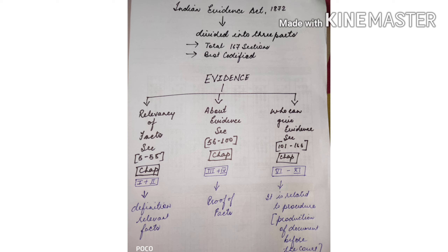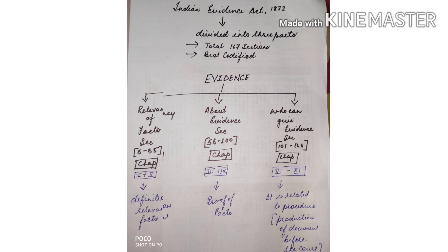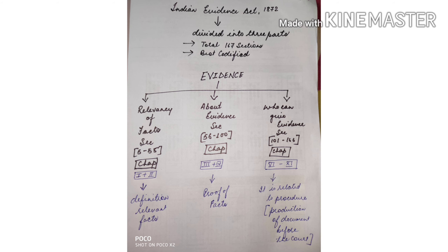The Act is divided into three parts: relevancy of facts, about evidence, and who can give evidence. Relevancy of facts covers Sections 5 to 55, about evidence covers Sections 56 to 100, and who can give evidence covers Sections 101 to 166. Chapters 1 and 2 cover Sections 5 to 55, Chapters 3 and 4 cover Sections 56 to 100, and Chapters 6 to 11 cover Sections 101 to 166.